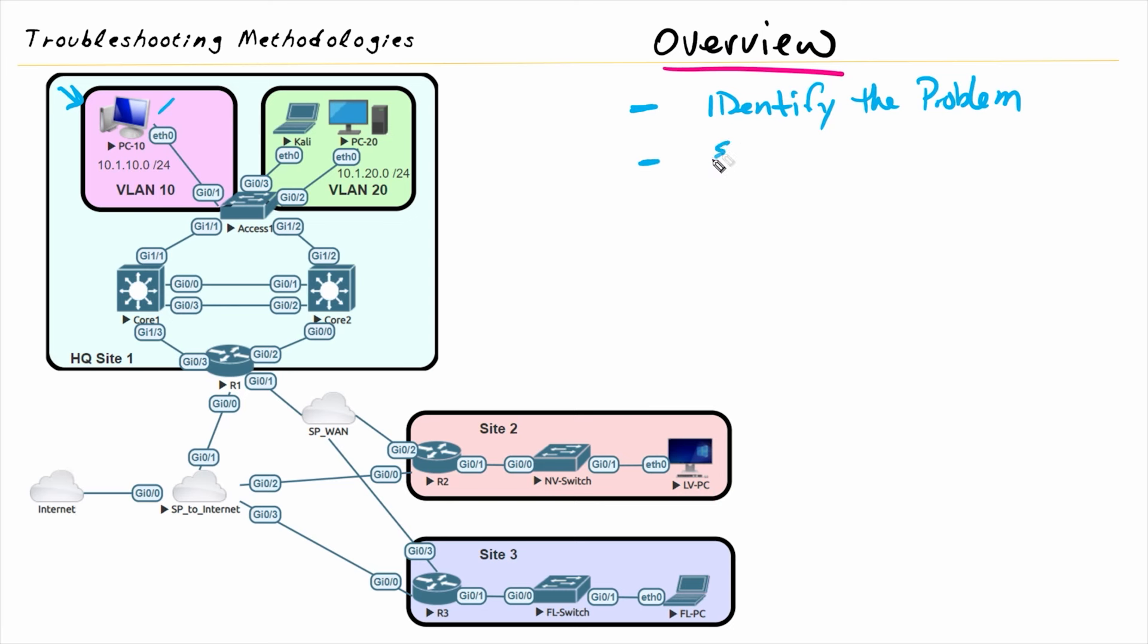The second step would be to establish a theory regarding why that might be happening. And so by leveraging a topology like this, we could ask ourselves a few questions. For example, is this computer powered on? If the computer is powered on, does it have an IP address? And if it's the DHCP client, did it get the right information regarding a default gateway and the subnet and all that good stuff? And then regarding this port, is this port on the switch, is it associated with the right VLAN, which is VLAN 10? And regarding the trunking, is going down from the access layer switch to the core, is trunking working and is VLAN 10 being allowed?